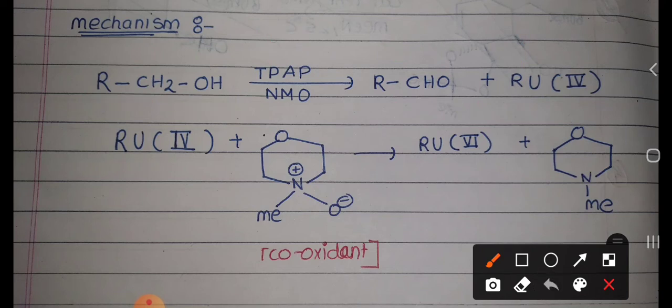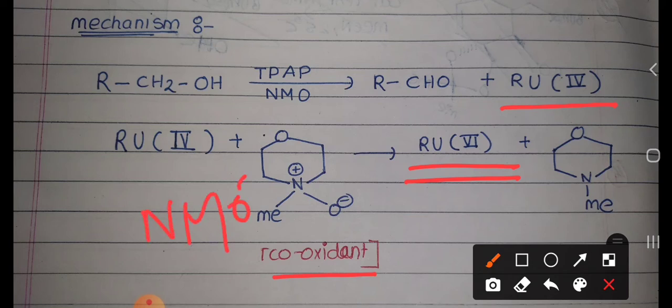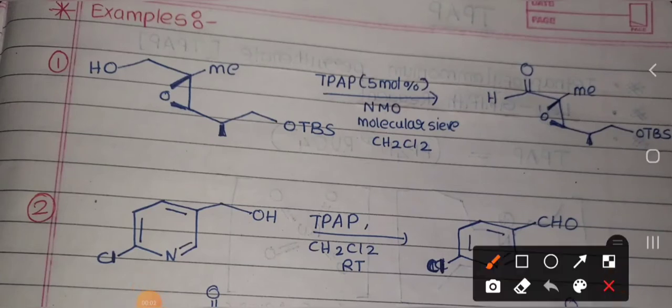After this process, the reagent needs to be regenerated. For this, a co-oxidant is used — that is NMO. After the oxidation of the primary alcohol to aldehyde, the ruthenium needs to convert back to the +6 oxidation state. Using the co-oxidant NMO, the ruthenium which was present in the +6 oxidation state is regenerated and can then be used again.